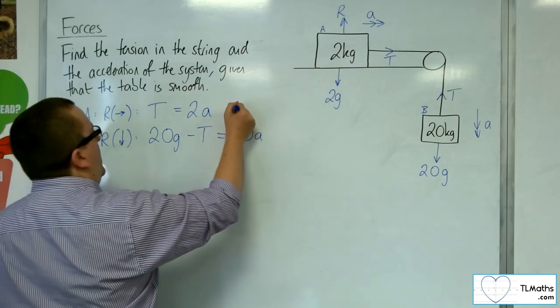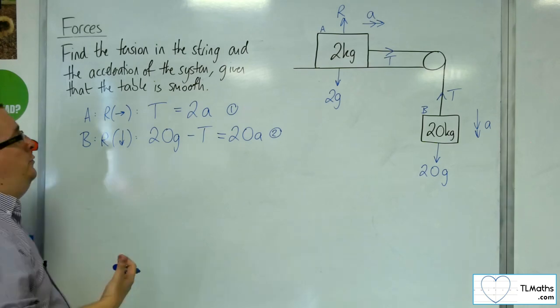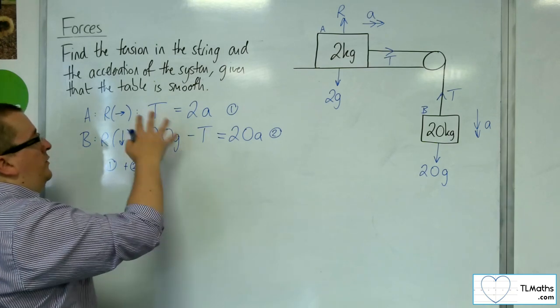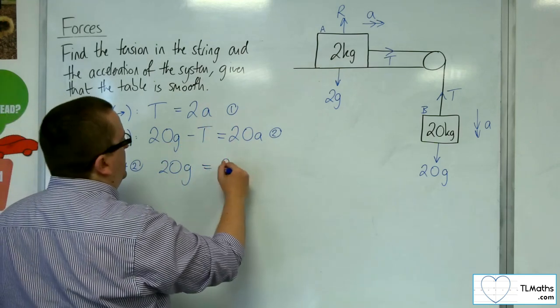So if I add these two equations together, the tensions will cancel. So equation 1 and equation 2, T take away T, it's gone. So I'm just left with 20g. It's got to be equal to 22a.